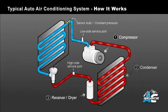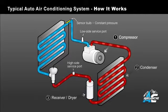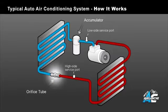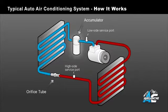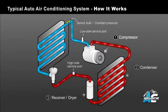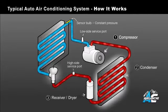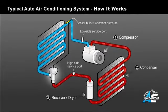The high pressure liquid flows through the receiver dryer, which has a desiccant bag inside it to filter and absorb small amounts of moisture that may contaminate the refrigerant. On AC systems using an orifice tube, the receiver dryer is replaced with an accumulator, which is located between the evaporator and the compressor. The high side service port is located here, between the condenser and the expansion valve or orifice tube.